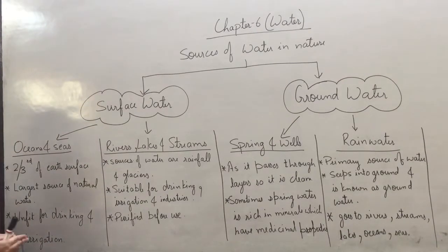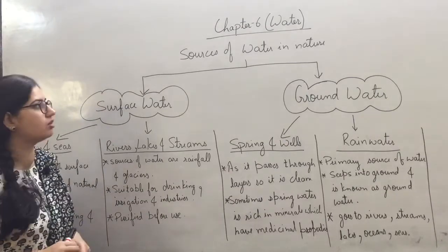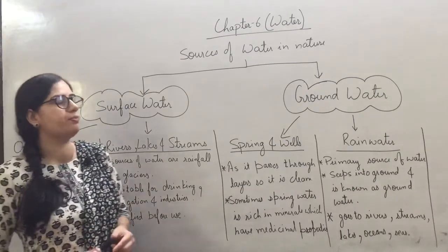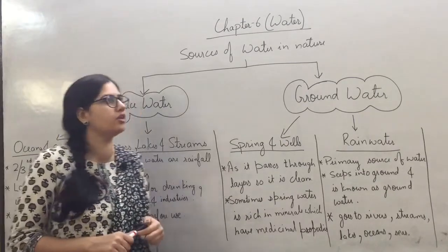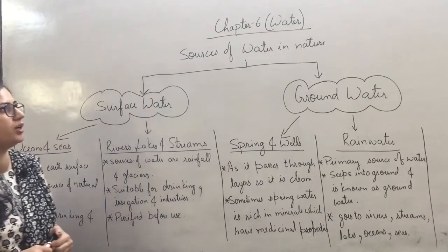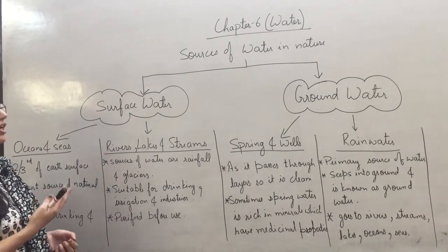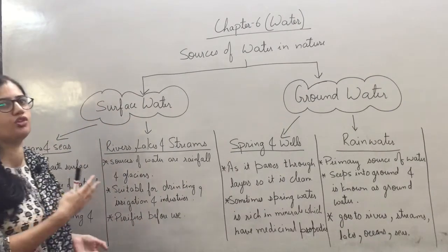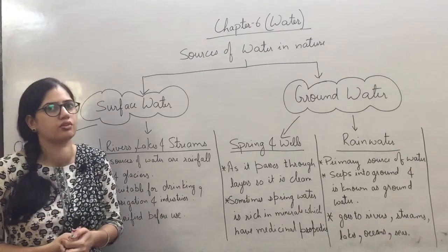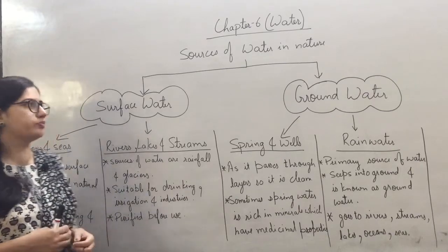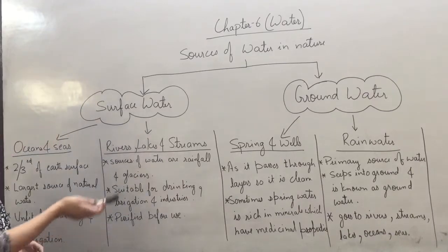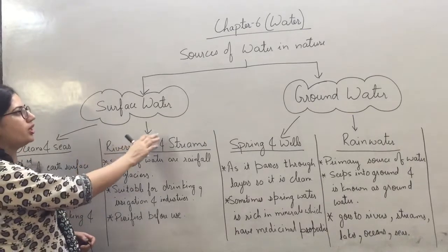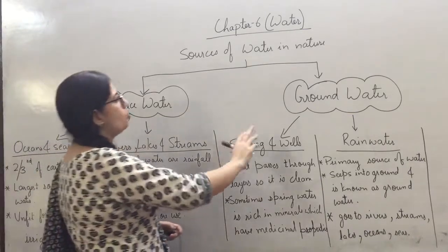Now, as we discussed in the last video, 71% of the earth's surface is covered by water. This water is present in 2 forms: surface water and ground water.